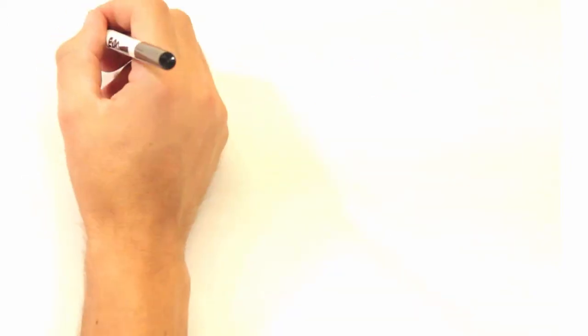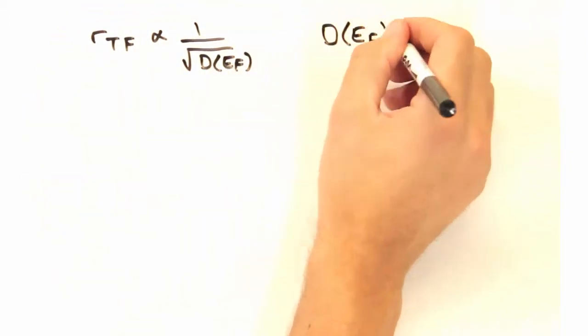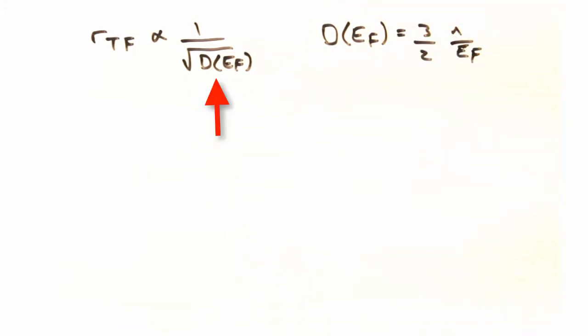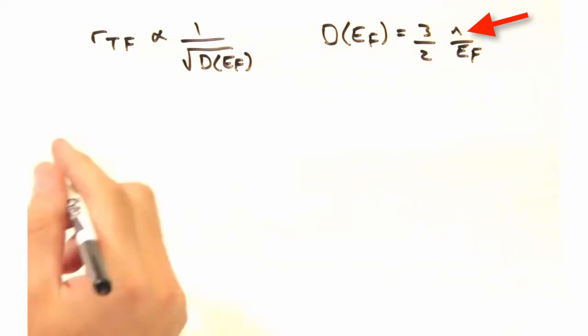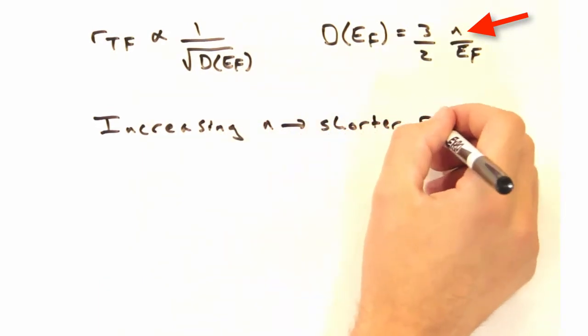So let's bring the screening length back to the density of states and the carrier concentration. Well, we know that RTF is inversely proportional to the square root of the density of states. And we also have this expression for the density of states. So we see that increase in carrier concentration n leads to a shorter screening length.